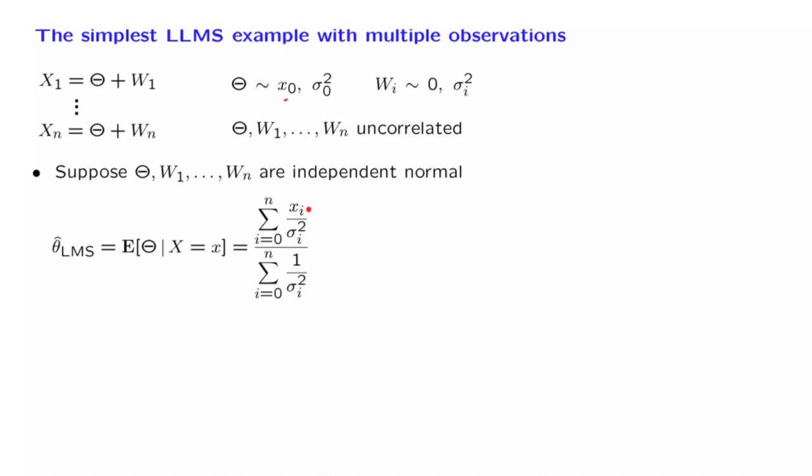On the other hand, if you want to translate this into random variable notation, then notice that this is going to be a random variable. This is our estimator. It's the conditional expectation of theta given X. And it's random because it depends on the values of the data that we see, which are themselves random variables.